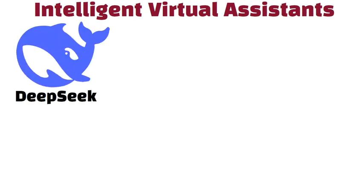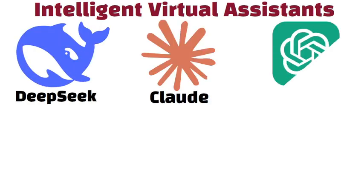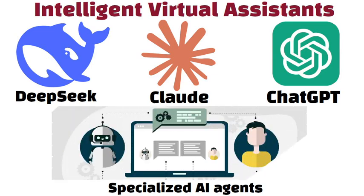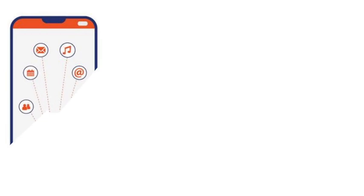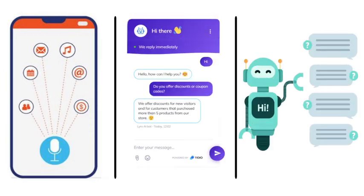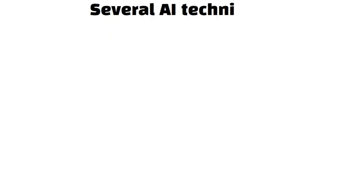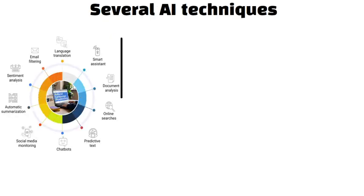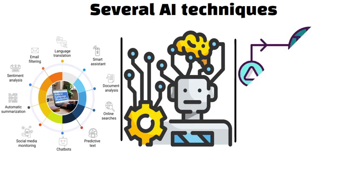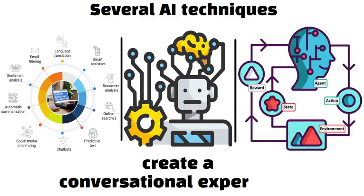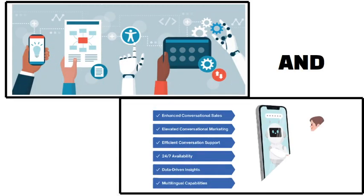Intelligent virtual assistants such as DeepSeek, Claude, and ChatGPT are specialized AI agents designed to interact with humans using natural language. They can understand spoken or written commands, provide information, set reminders, and even tell jokes. These agents combine several AI techniques such as natural language processing, machine learning, and sometimes even deep reinforcement learning to create a conversational experience. Their goal is to make technology more accessible and helpful in everyday tasks.